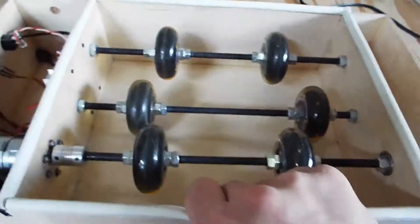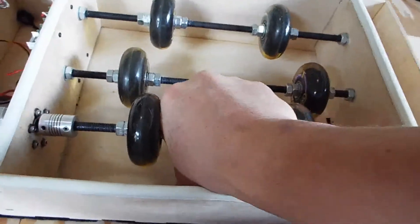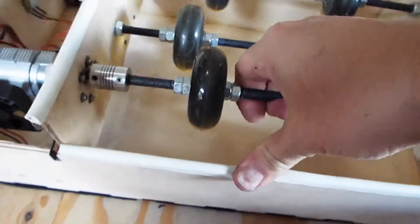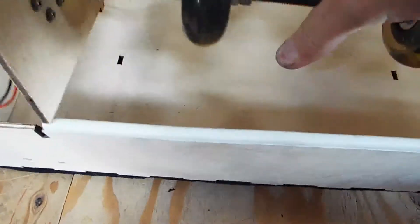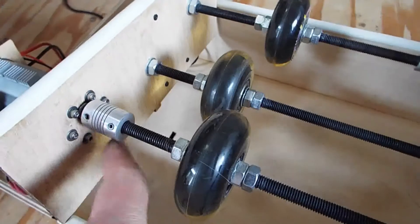And then to make the thing really easy to work on, the whole mechanism comes out. It just sits in slots on the ball mill. And this gives you access to all the individual screws.